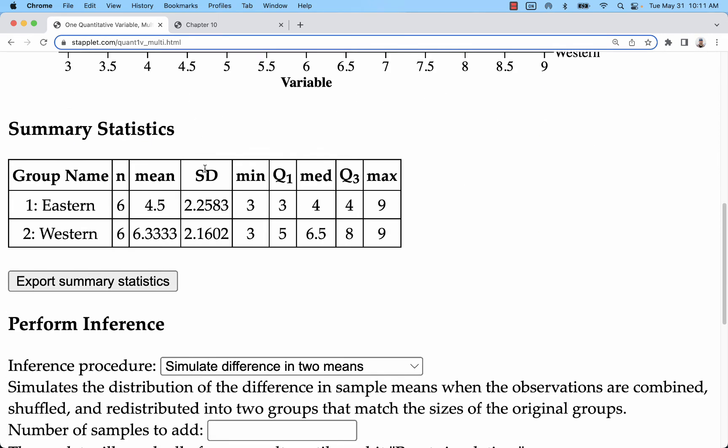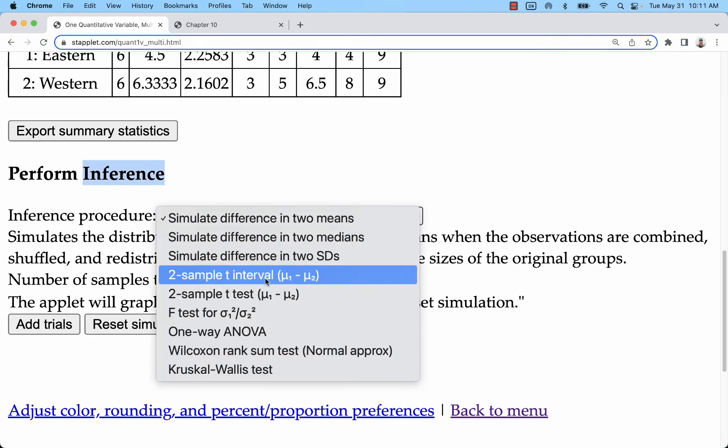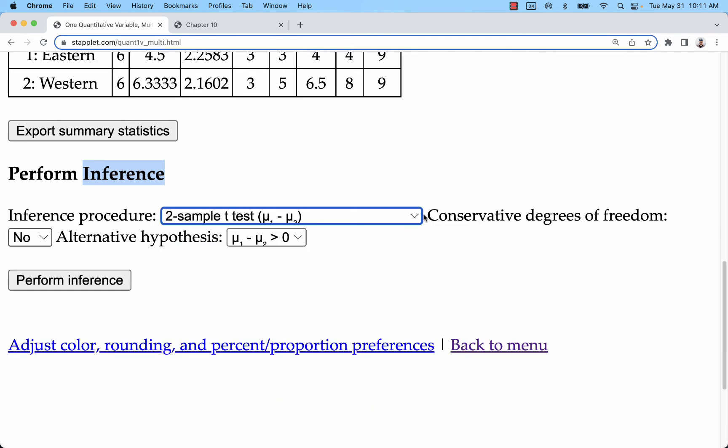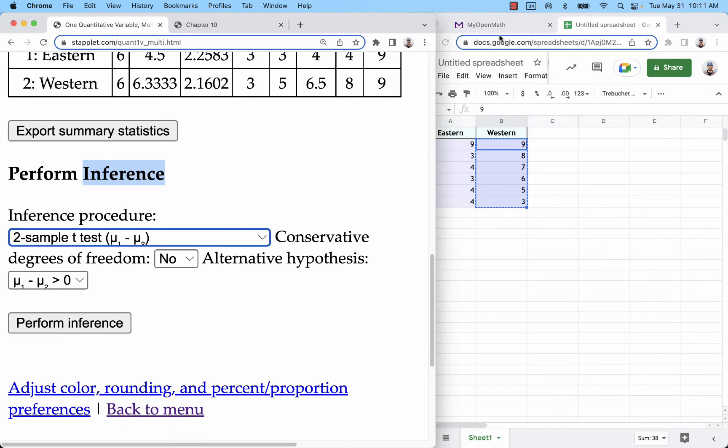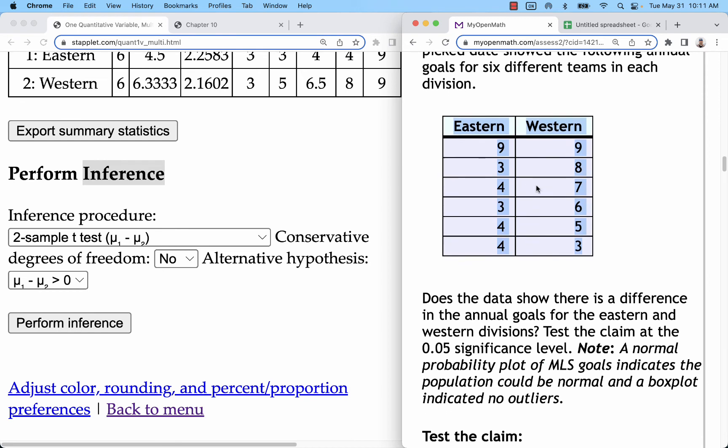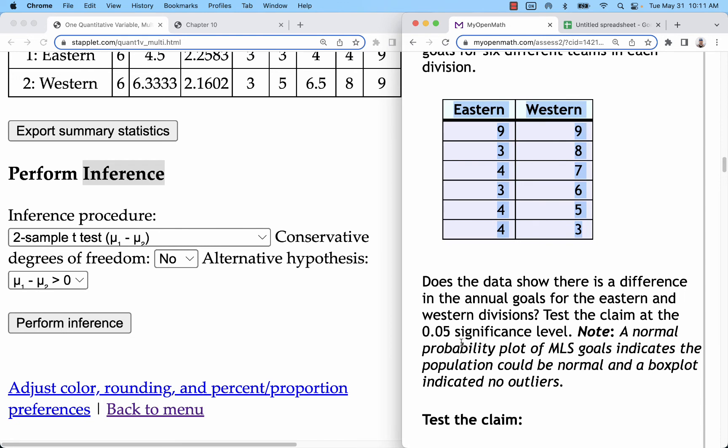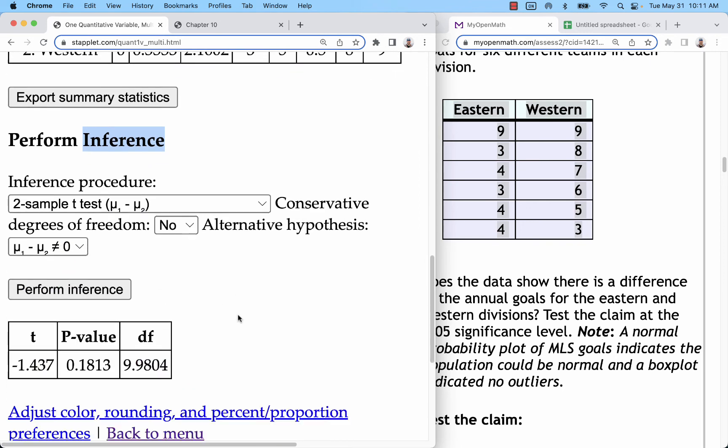I've got my dot plots. I'm going to go all the way down to inference. And I want, again, a one sample t-test. Now I need to know what my alternative hypothesis is for this problem. Does the data show that there is a difference in the goals for these two divisions at the 0.05 level of significance? So we don't have a left or right tail. We just have a not equal sign. That would be a difference. Perform our inference there.